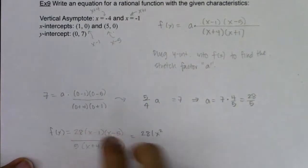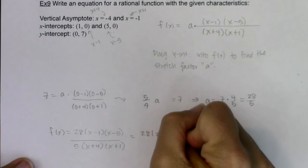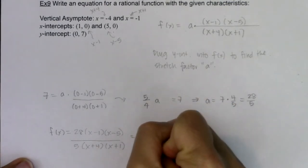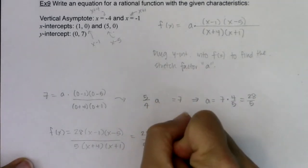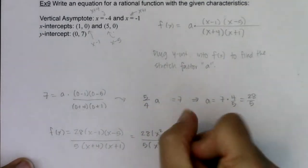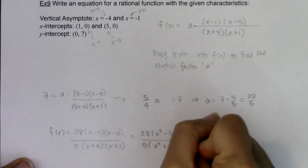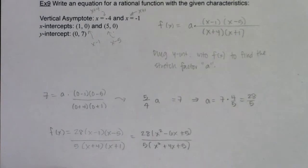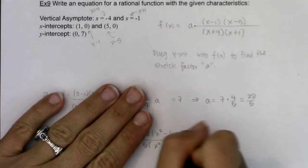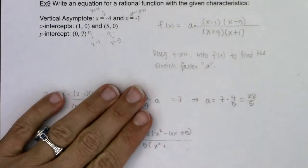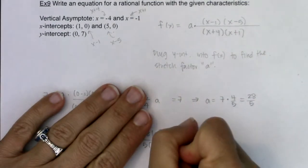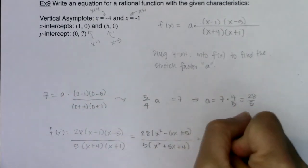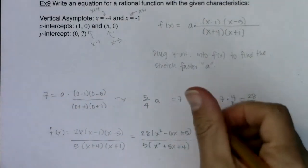So I could multiply the binomials. So I would have 28, this would be x squared minus 5 minus 1, so minus 6x plus 5. And this would be 5 times, let's see, x squared, 1 and 4 is 5. All right, that is fine by me. Oops, and actually I mixed those up. Let me rewrite that.